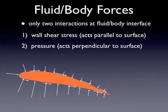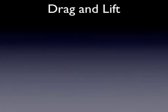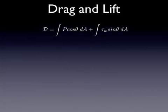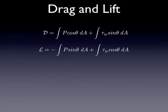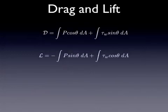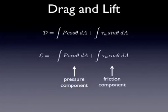When you sum up those forces and combine them, we typically break them up into two components. The component perpendicular to the direction of flow we call lift, and the force parallel with the direction of flow we call drag. Drag and lift can be described mathematically with two equations, and they're both functions of two components: a pressure component and a friction component due to the shear stress.